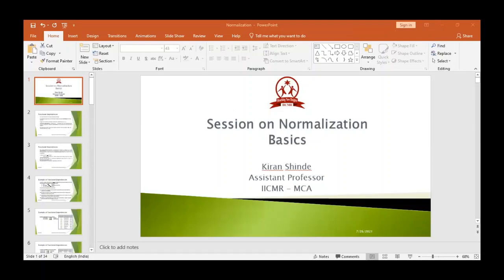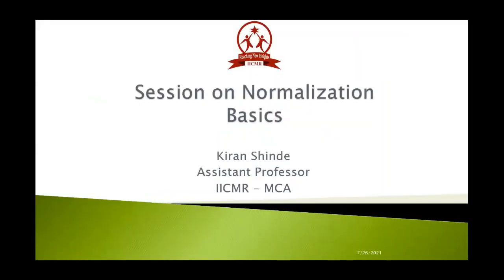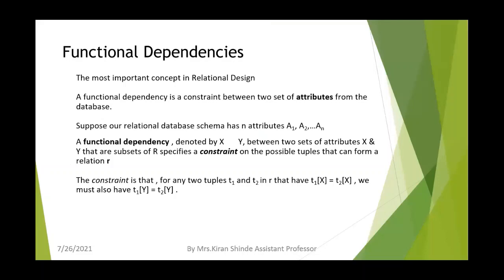Let us try to understand what is the concept of functional dependency. Functional dependency is a very important concept in any relational design. It is nothing but a constraint between two sets of attributes from the database. Suppose our relational database schema has n attributes, a1 to an, then the functional dependency is denoted as x arrow y between two sets of attributes x and y. In a relation r, this constraint denotes the relationship between two tuples.